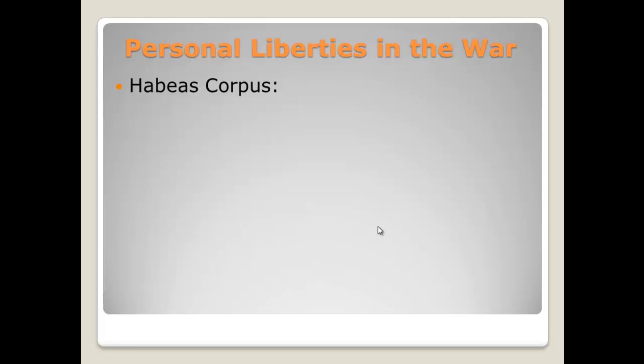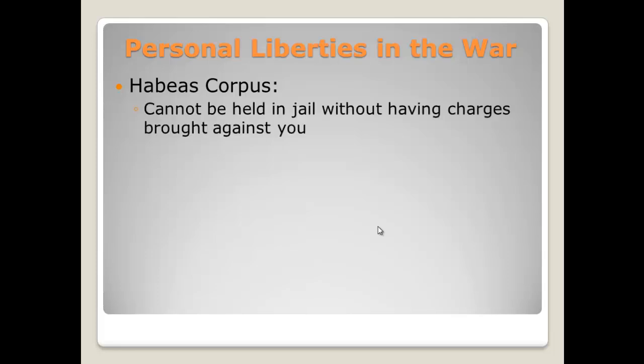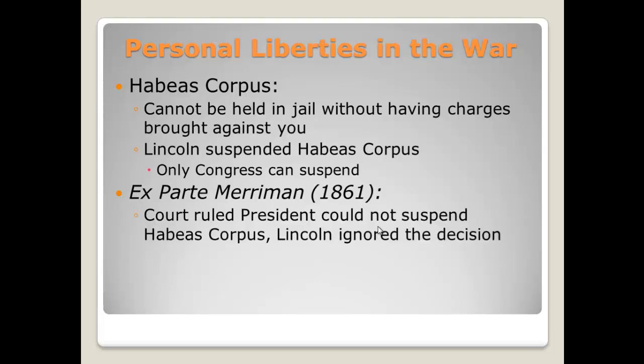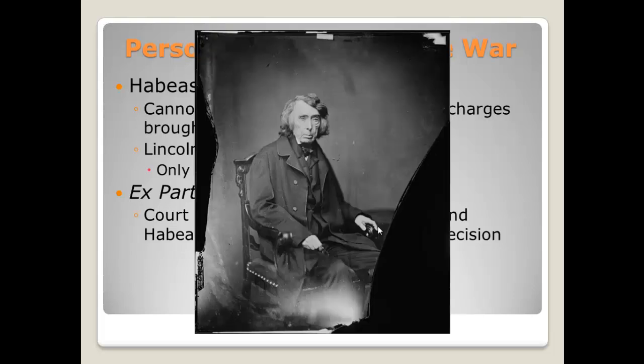Personal liberties tend to go down during wars. Habeas corpus — guaranteed by the Constitution — means you cannot be held in jail without having charges brought against you. During the Civil War, Lincoln suspended habeas corpus in Maryland, holding people in jail without trial. This is something only Congress can suspend, but he did so anyway, increasing the power of the presidency. In 1861, the court case Ex parte Merryman ruled the president could not suspend habeas corpus — a decision made by Chief Justice Roger B. Taney — but Lincoln ignored the decision.